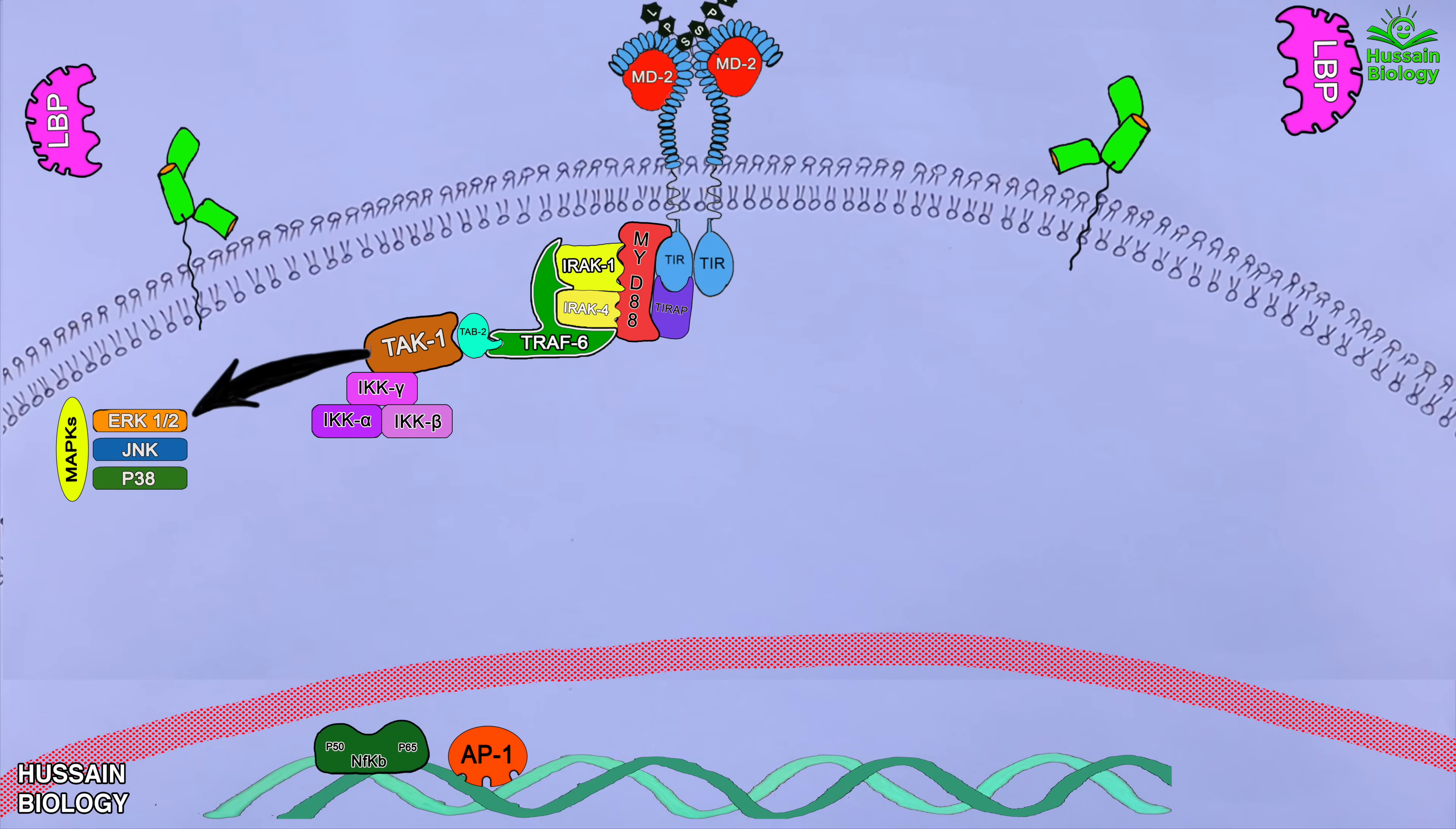So this concludes the myD88 dependent pathway. Now let's get to the TRIP dependent pathway. First of all TRAM protein is recruited to TIR domain of TLR4 protein which then recruits and activates the TRIP protein.